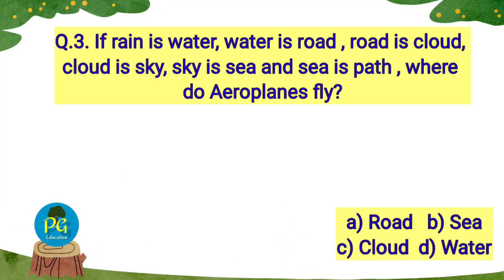Question number three: if 'rain is water', 'water is road', 'road is cloud', 'cloud is sky', 'sky is sea', and 'sea is path', where do aeroplanes fly? Options: A) road, B) sea, C) cloud, D) water. This question is very easy. Aeroplanes fly in the sky, and in the statement it is given that 'sky is sea', so the correct answer is 'sea'. Option B is the correct answer.